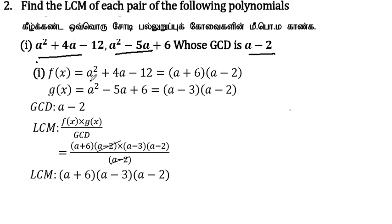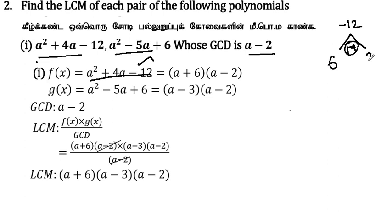f(x) is equal to a² + 4a - 12. To factor this, the product is equal to -12 and the sum is +4. If we multiply 6 into 2, we get 12, and 6 minus 2 gives us 4. So a + 6 and a - 2 are the factors.